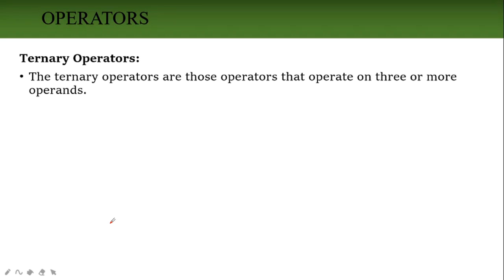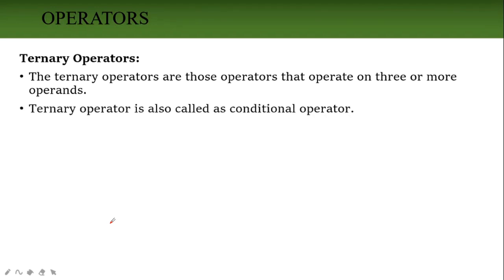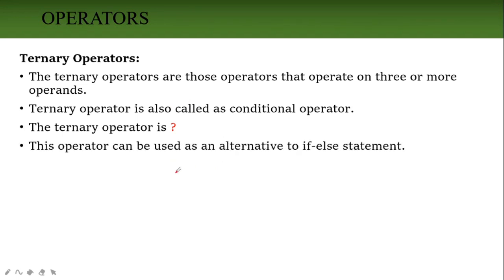Finally, ternary operator. Ternary means it operates on 3 or more operands. The ternary operator is also called the conditional operator because it is the alternate for the if-else statement. The question mark (?) is the ternary operator. When we learn the if-else statement, we will understand how to use this ternary operator.